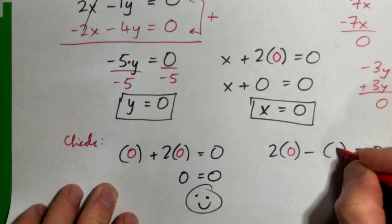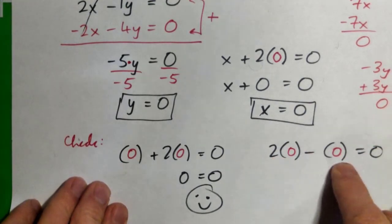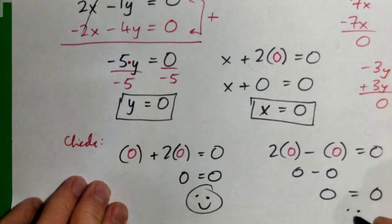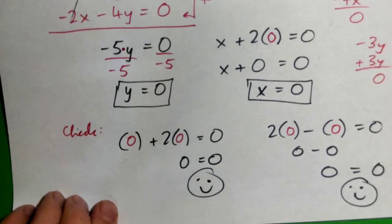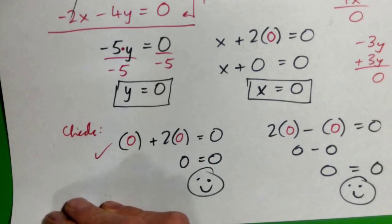If I plug 0 in for x and y into the other equation, I get 2 times 0 minus 0 - that's just 0 minus 0, that's 0 equals 0. Smiley face again, so it does check out. Cool.